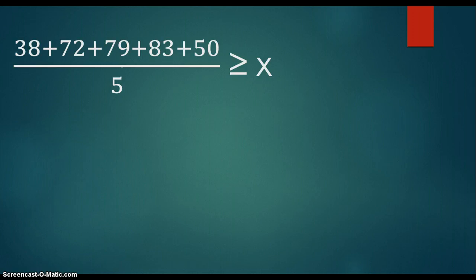For this problem I needed to find if Sally's test scores, if she scored a 50 on the next test, would she be earning a B for the semester? And the ones on top of the fraction besides the 50 are the scores that she got so far. So I needed to find out if it would be a B. So the first thing I did was add all those up: the 38, 72, 79, 83, and 50. And I got 322 divided by 5 ≥ x.